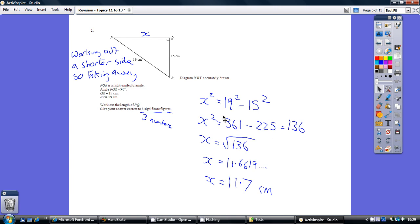How do we undo this squaring? Well, we do the opposite, which is square rooting. So x is the square root of 136. Using our calculator, that gives us 11.6619.